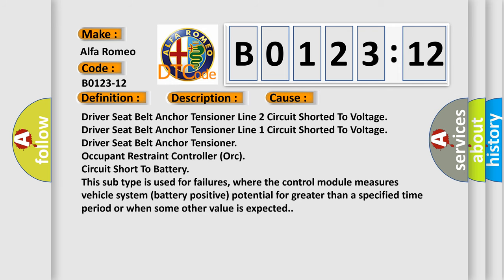This diagnostic error occurs most often in these cases: driver seat belt anchor tensioner line 2 circuit shorted to voltage, driver seat belt anchor tensioner line 1 circuit shorted to voltage, driver seat belt anchor tensioner occupant restraint controller ORC circuit short to battery.